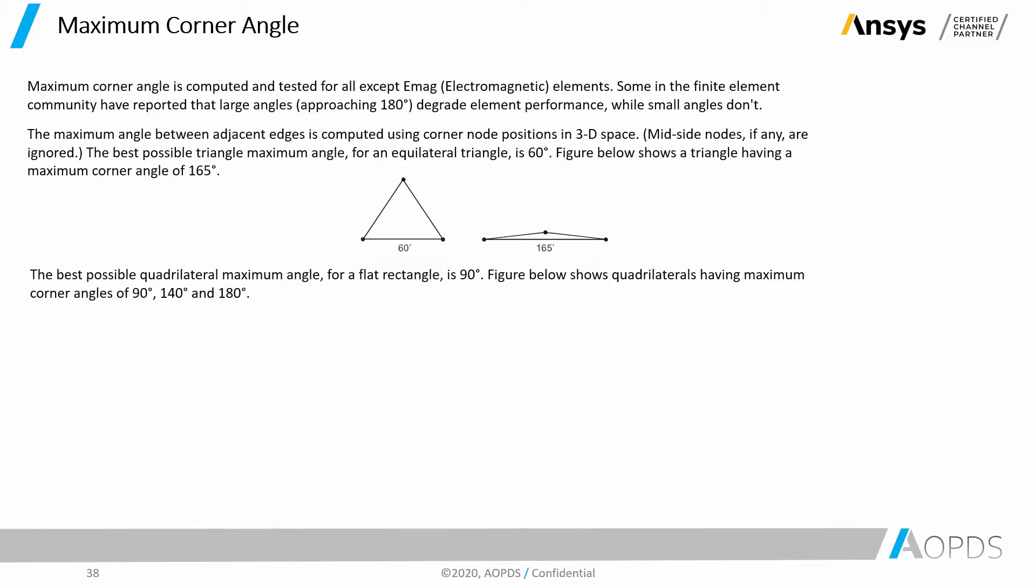The best possible quadrilateral maximum angle for a flat rectangle is 90 degrees. Figure below shows quadrilaterals having maximum corner angles of 90 degrees, 140, and 180.